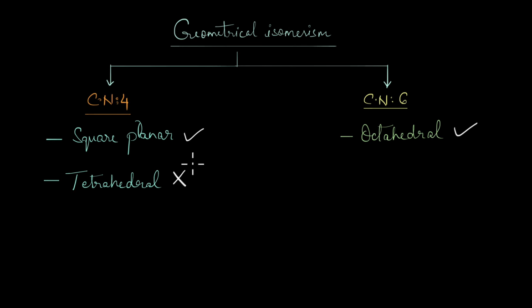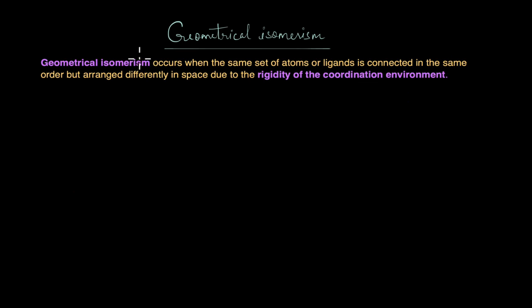Why do we not see geometrical isomerism in tetrahedral complexes? What is actually stopping a tetrahedral complex from exhibiting geometrical isomerism? Geometrical isomerism occurs when the same set of atoms or ligands is connected in the same order but arranged differently in space. This is due to the rigidity of the coordination environment.